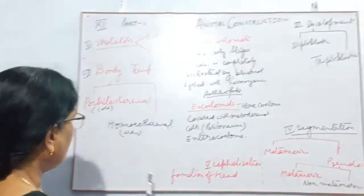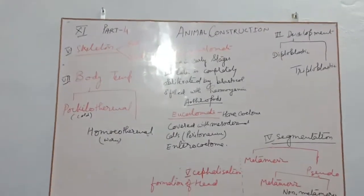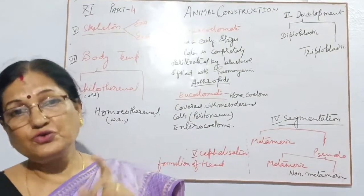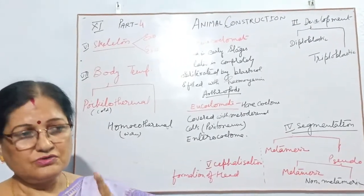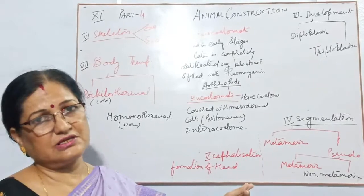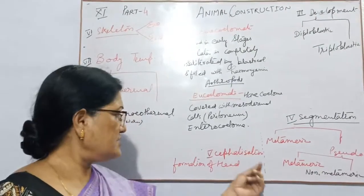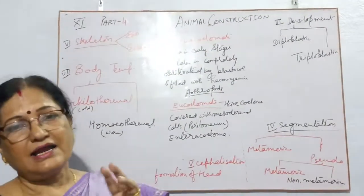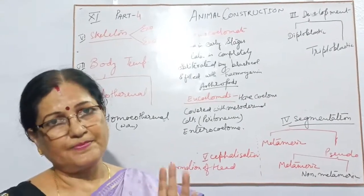Now we will come to the different types of classification. All the terms I taught you in this chapter will be used in the classification of animals. While we study animals in the laboratory, we will discuss about the classification. But children, all the names you should remember — what is the meaning of exoskeleton, cephalization, diploblastic, triploblastic, and different terms — then you can study classification very easily.